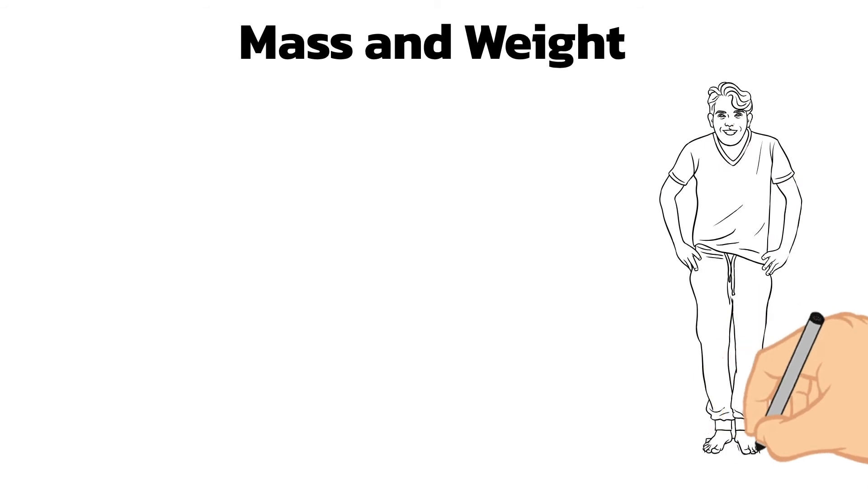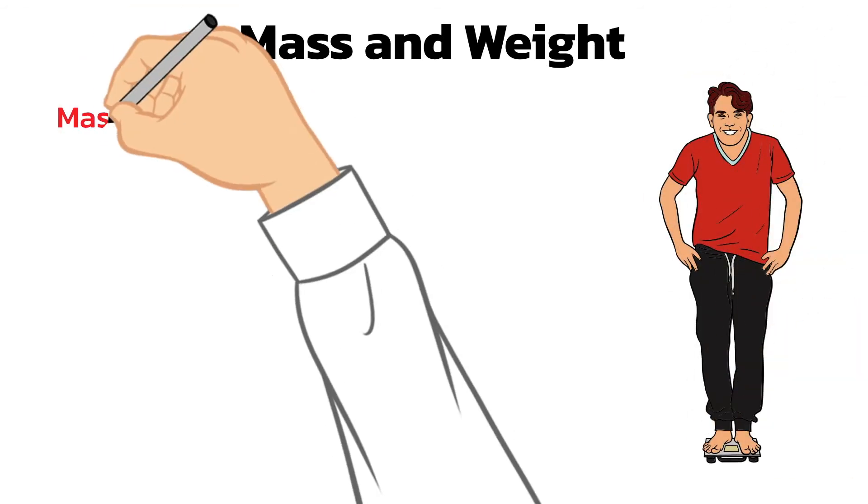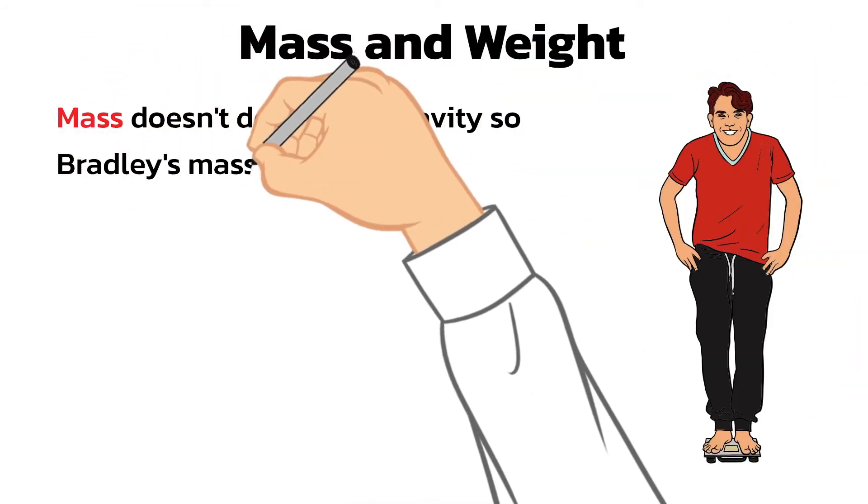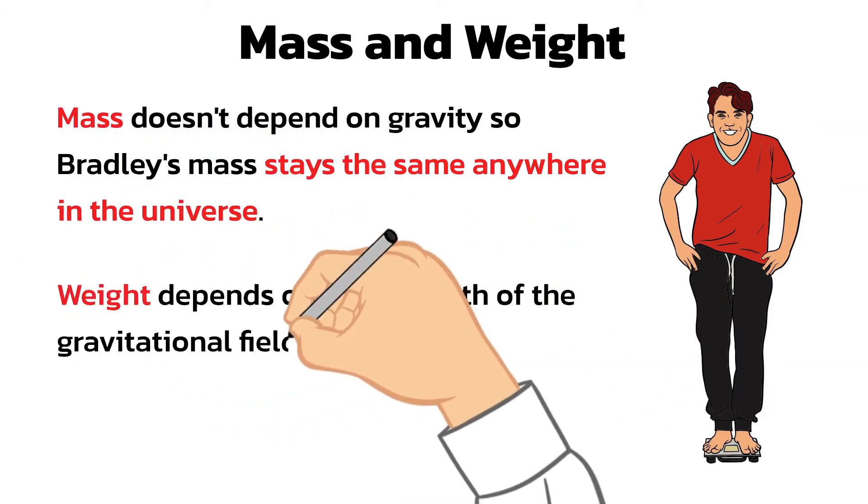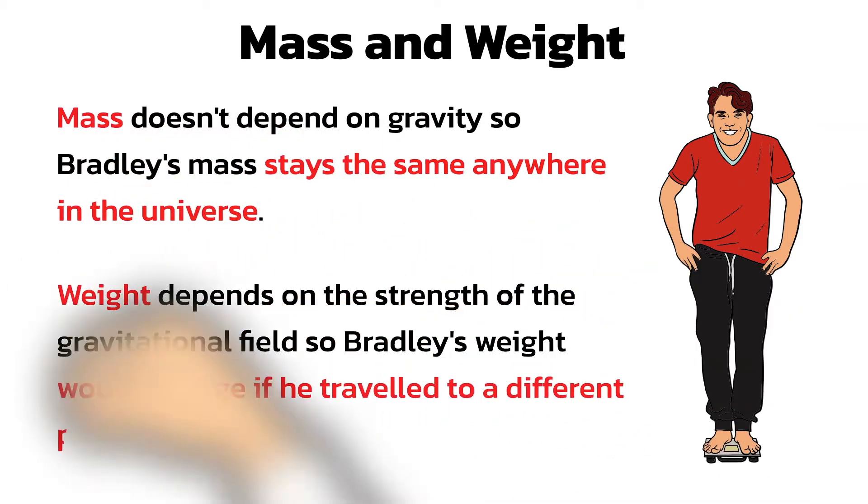Mass doesn't depend on gravity, so Bradley's mass stays the same anywhere in the universe. Weight depends on the strength of the gravitational field, so his weight would change if he traveled to a different planet. The gravitational field strength of Jupiter is larger than that of Earth, so Bradley would have a larger weight on Jupiter, but his mass would stay the same.